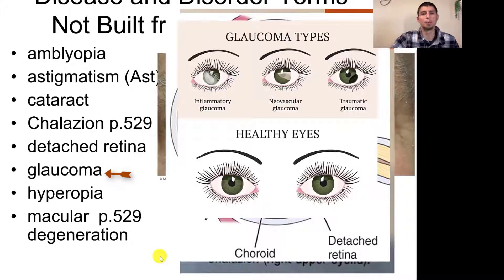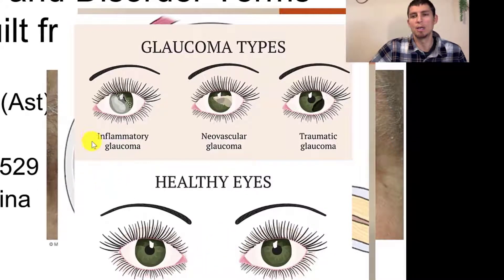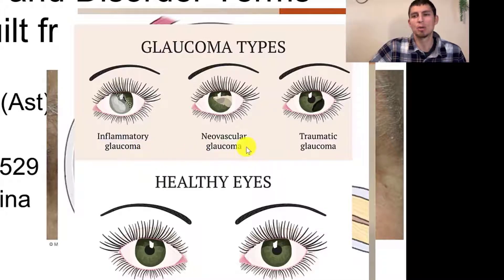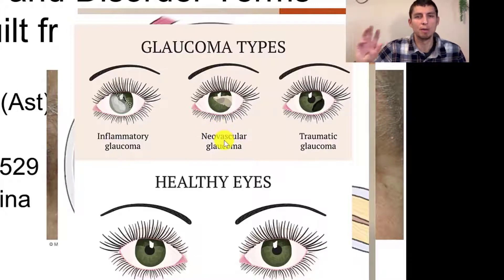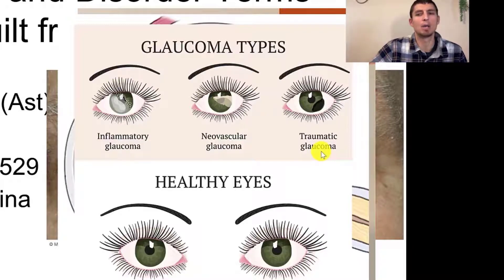Glaucoma is a term meaning high pressure in the eye. This graphic illustrates several types: inflammatory glaucoma, where inflammation of the eye causes increased pressure; neovascular glaucoma — neo meaning new and vascular meaning blood vessels — so new blood vessel circuitry in the eye causes increased pressure; and traumatic glaucoma on the right. When you have trauma to the head, such as in a motor vehicle accident or physical abuse, there's swelling inside of the eye causing increased pressure.